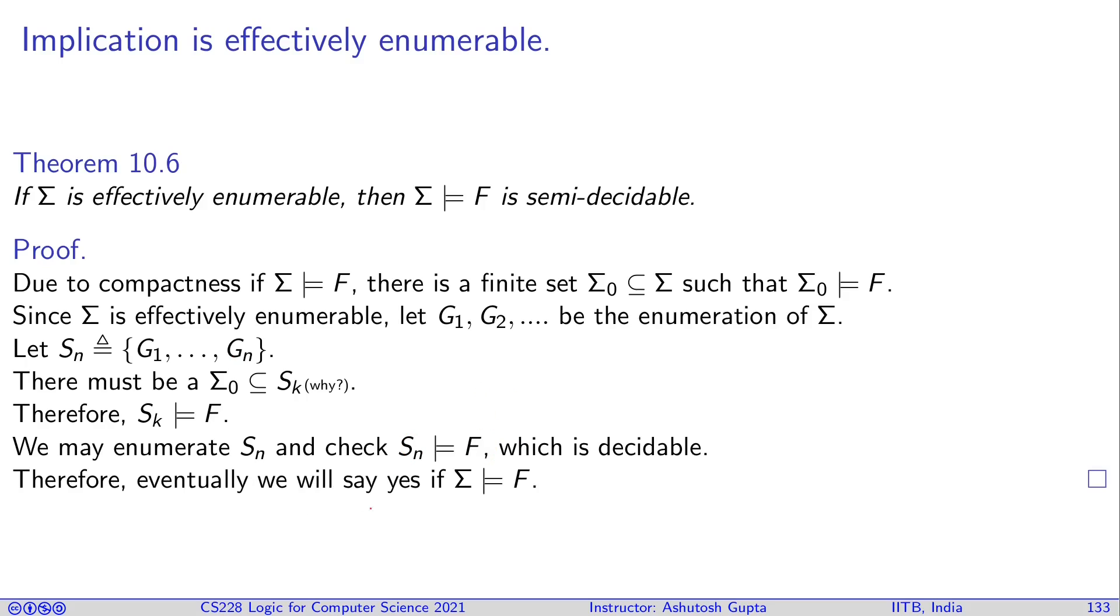Therefore, eventually we will say yes if Σ implies F. However, if Σ does not imply F, this method is never going to finish because it was always waiting for somebody to become superset of Σ_0. But Σ_0 doesn't exist, it doesn't know it doesn't exist. So it will keep running. If answer is no, this algorithm does not finish. But if answer is yes, it will finish. And that means it is semi-decidable.